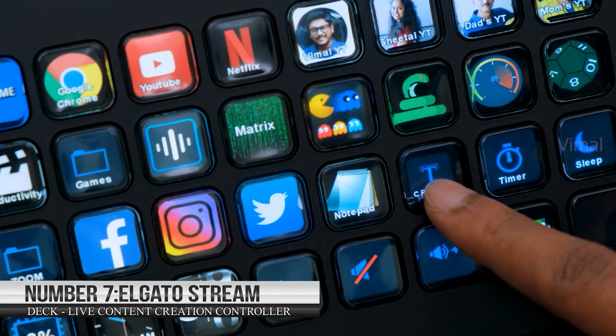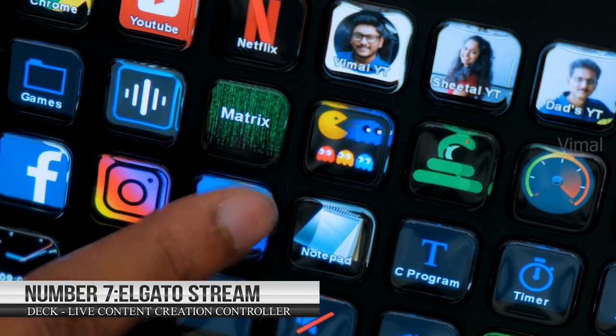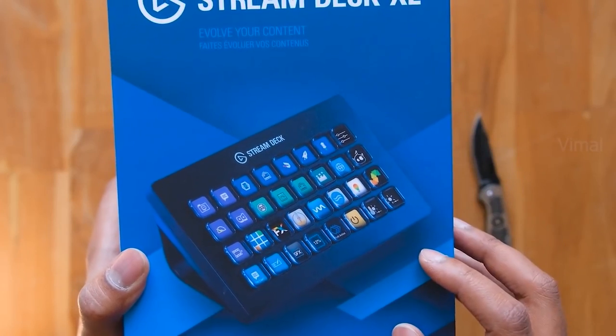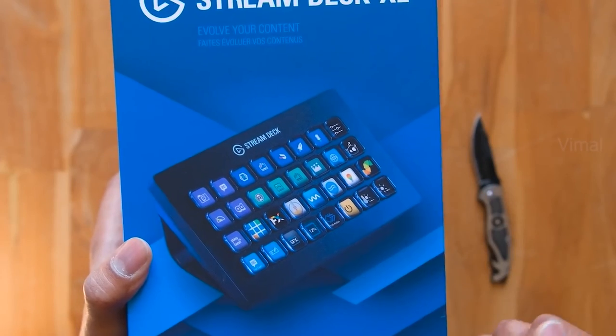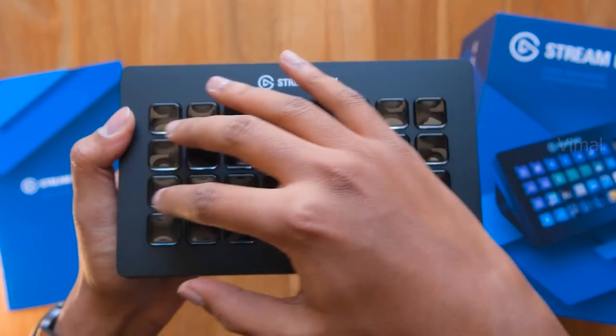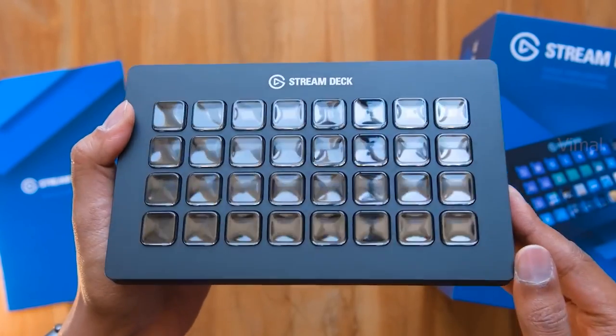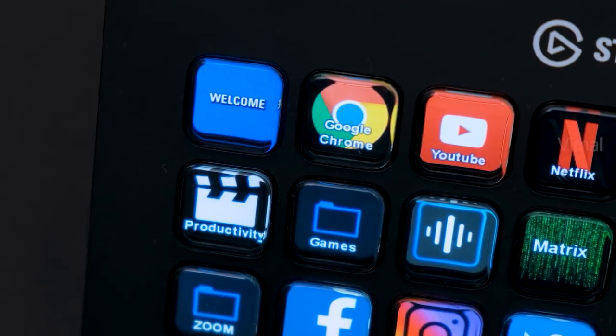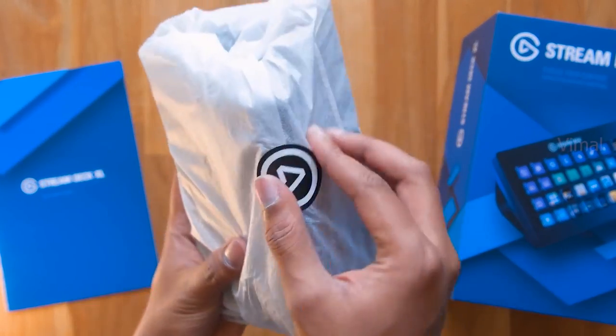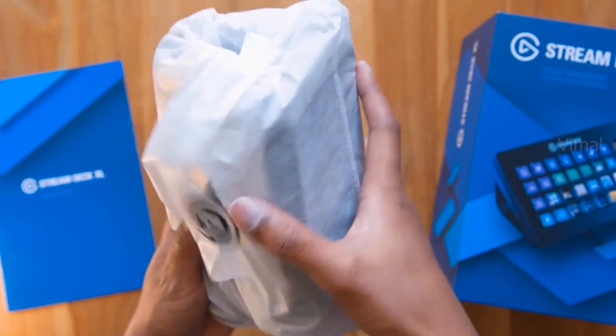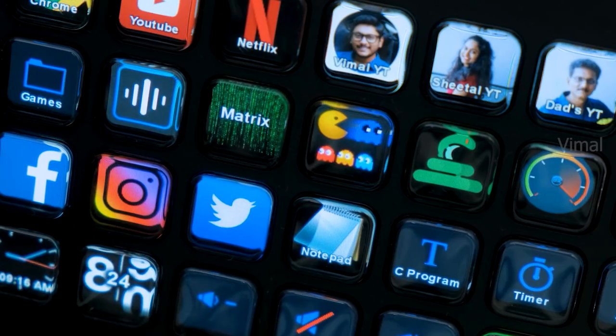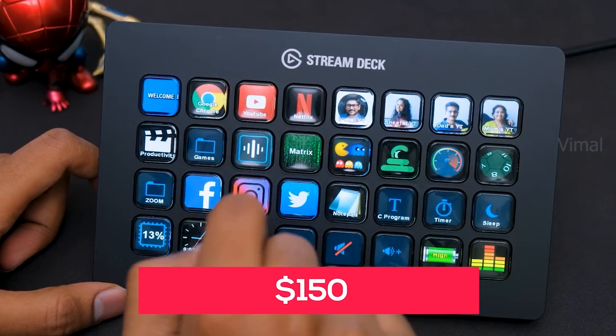Number seven: Elgato Stream Deck Live Content Creation Controller. Having 15 customizable LCD keys and an adjustable stand, this top-rated creation controller offers instant triggers and unlimited responses after taps. The keys are responsive and are made for a modern standard. While making your live content, this creation controller aids your creativity and makes your work much more manageable. With this device, you can create unique key configurations for different apps and switch between them on the fly. It sells for $150.